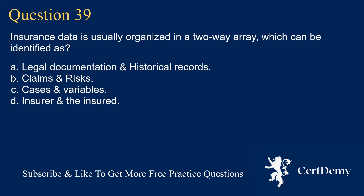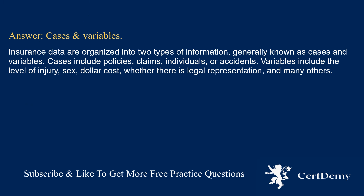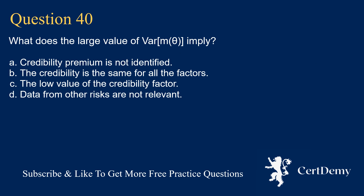Question 39. Insurance data is usually organized in a two-way array, which can be identified as: legal documentation and historical records; claims and risks; cases and variables; insurer and the insured. The answer is: cases and variables. Insurance data are organized into two types of information: cases and variables. Cases include policies, claims, individuals, or accidents. Variables include the level of injury, sex, dollar cost, whether there is legal representation, and many others.